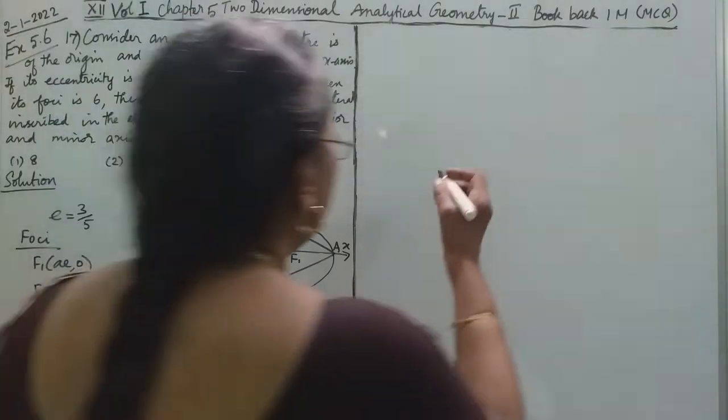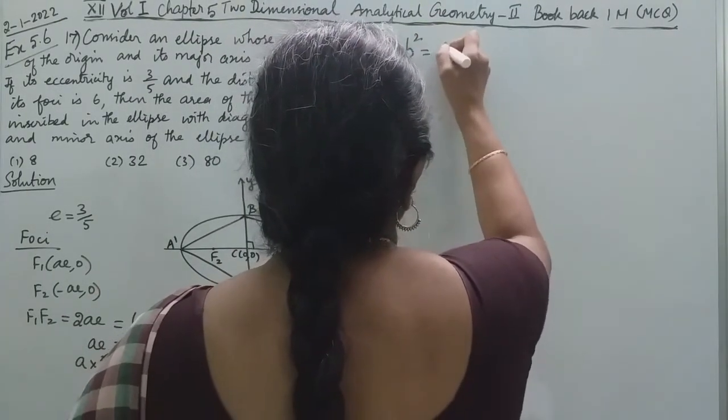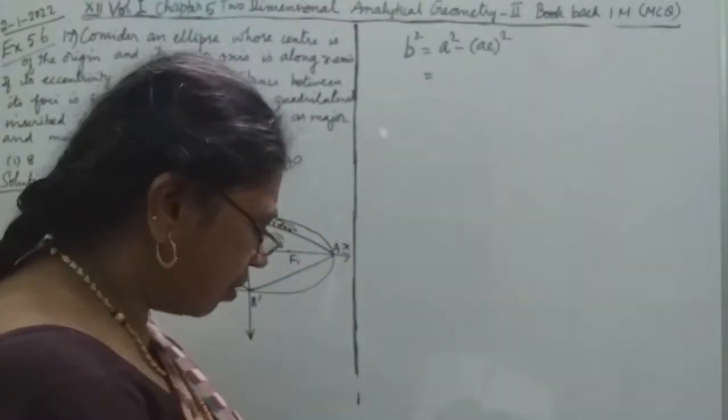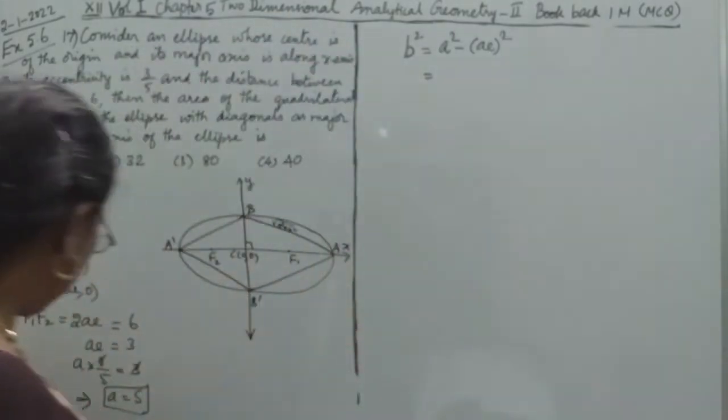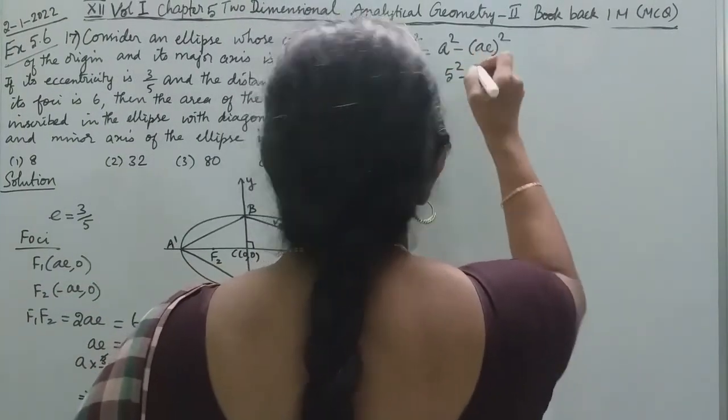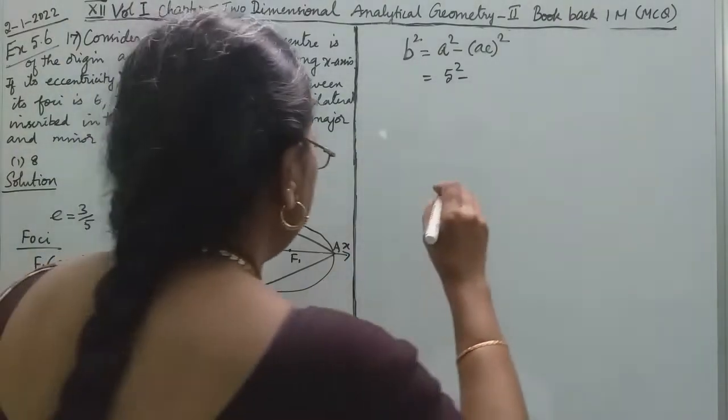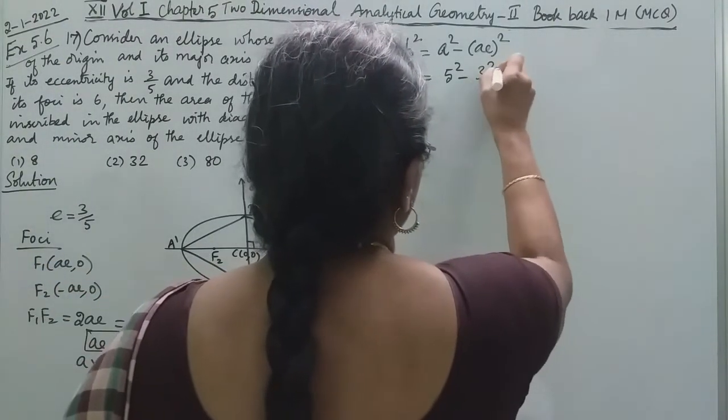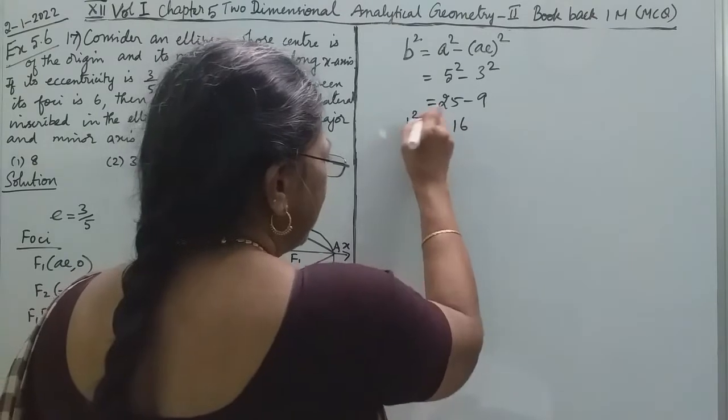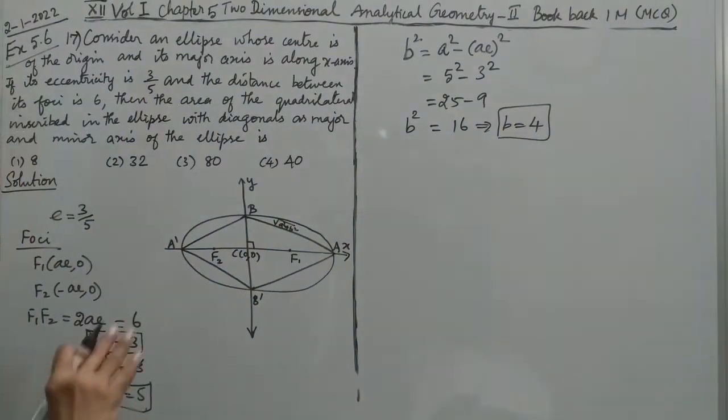So b² = a² - (ae)², that is equal to a²(1-e²). A² is, A we have found as 5, so 25 × (1 - 9/25) = 25 - 9 = 16. So b² = 16, that means b = 4. Now A = 5 and B = 4.